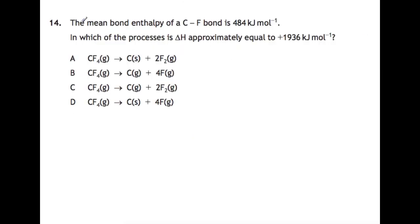Question 14: the mean bond enthalpy of the CF bond is this here, so that's how much energy is needed to break this bond, and which of the processes is delta H approximately equal to this. So this is a bond enthalpy question, so remember you always do breaking minus making, and just treat all of the values as being positive.